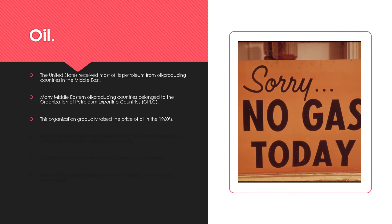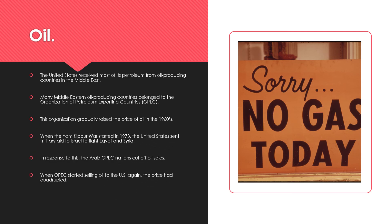The United States received most of its petroleum from oil-producing countries in the Middle East. Many Middle Eastern oil-producing countries belonged to the Organization of Petroleum Exporting Countries, or OPEC, which gradually raised the price of oil in the 1960s. When the Yom Kippur War started in 1973, the United States sent military aid to Israel to fight Egypt and Syria. In response, the Arab OPEC nations cut off oil sales. When OPEC finally decided to start selling oil to the U.S. again, the price had quadrupled. Many gas stations displayed signs saying 'Sorry, no gas today,' and people faced long lines trying to get gasoline.